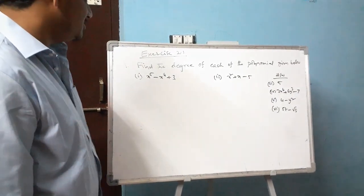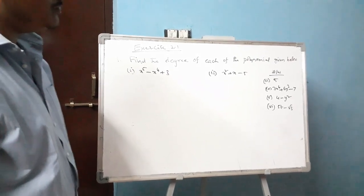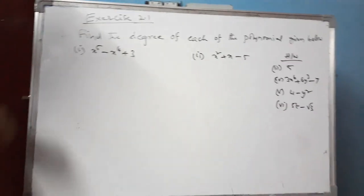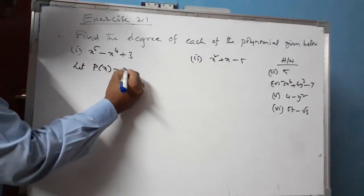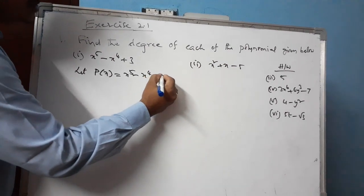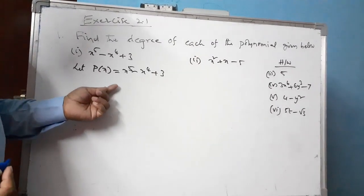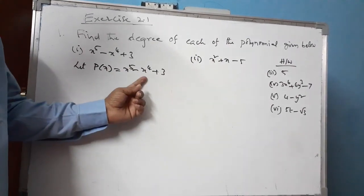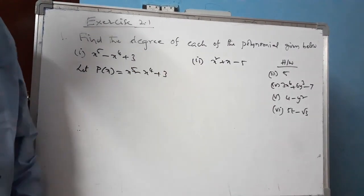Now Exercise 2.1: find the degree of each of the polynomials given below. Let p(x) = x to the power of 5 minus x to the power of 4 plus 3. This polynomial contains 3 terms: the first term is x to the power of 5, the second term is x to the power of 4, and the third term is 3.